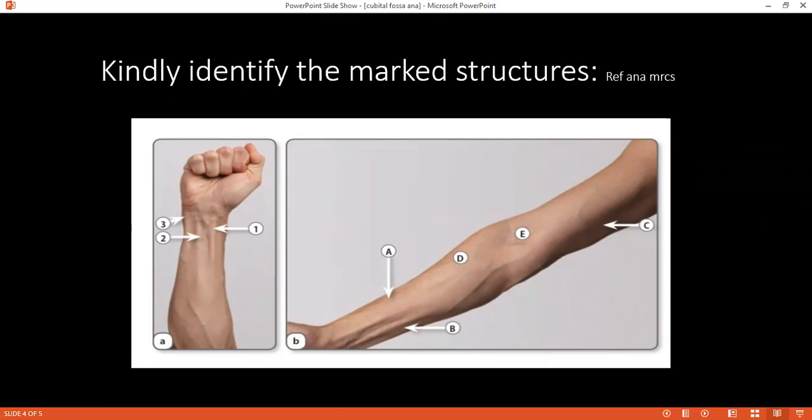Can you tell me the cutaneous distribution of the median nerve? Yes ma'am. In the palm, lateral two-thirds of the palm and lateral three-and-a-half fingers palmar surface and tip of lateral three-and-a-half fingers dorsal surface. And tip of index, middle and thumb. Yes. Okay.